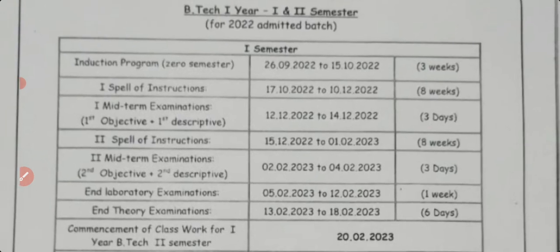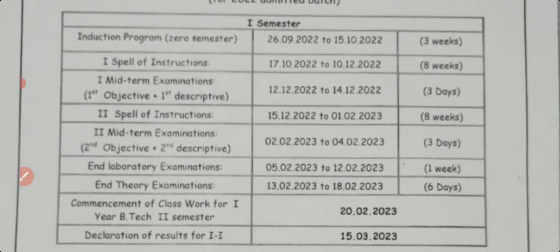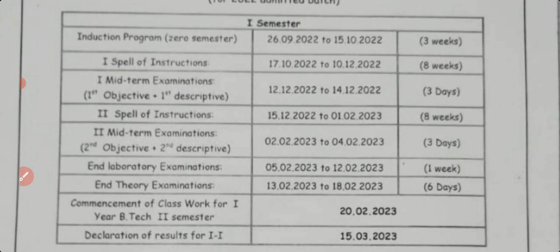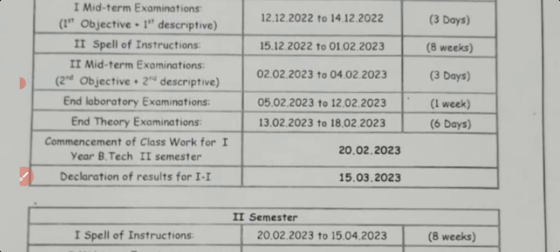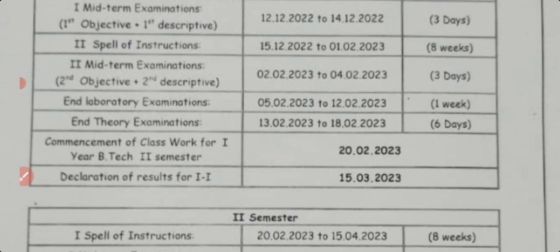The second mid exam runs from February 2nd to February 4th — three days conducted. Lab (end laboratory) examination is from February 5th to February 12th — one week of lab exam. End theory exam starts from February 12th. Results will be declared approximately by March 15th — first semester results.